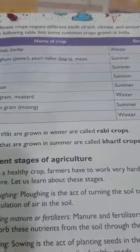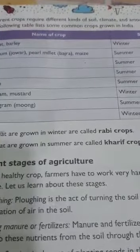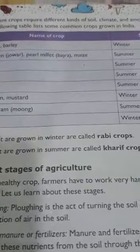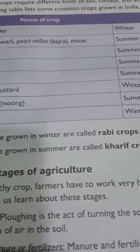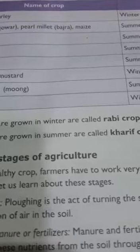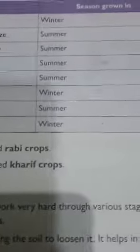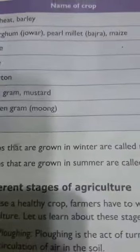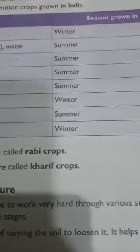Different crops require different kinds of soil, climate, and amount of water to grow. Here is a table that lists some common crops grown in India. You can see the crop names and the season they are grown in.